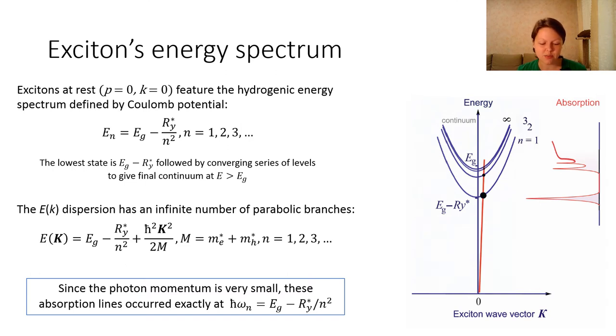Here, exciton exhibits translational center-of-mass motion as a single uncharged particle. The energy dispersion has an infinite number of parabolic branches. It includes the hydrogen-like set of energy levels, the kinetic energy of the translational motion, and the band gap energy.